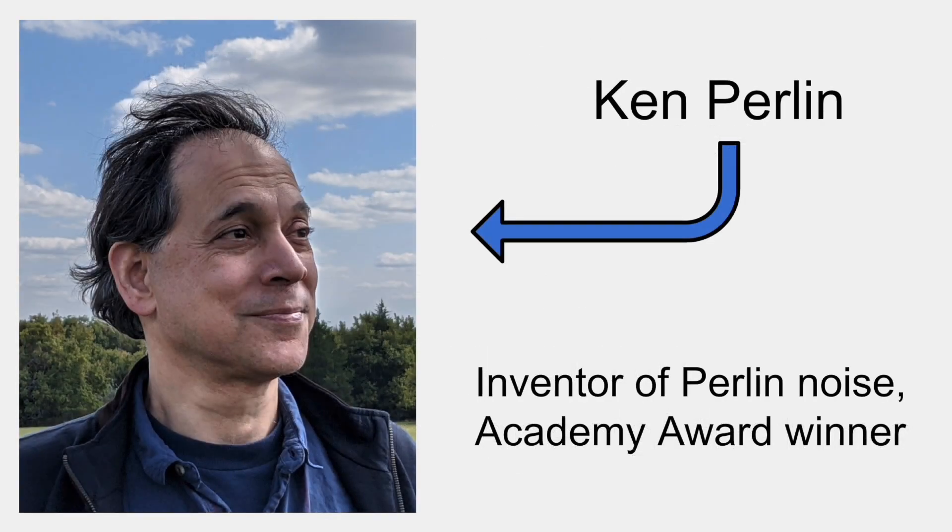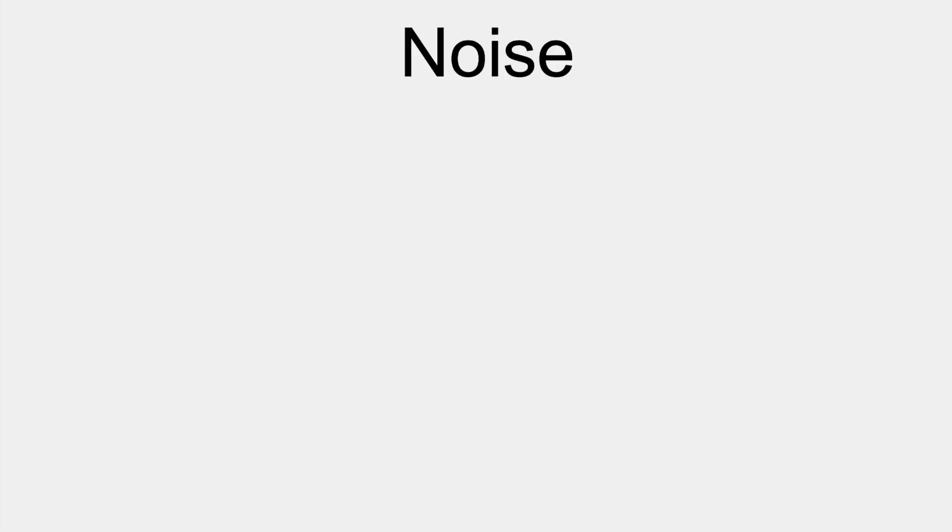Perlin Noise is an algorithm devised by Ken Perlin in 1983 to generate noise that is always perfectly smooth. First of all, let's define noise.